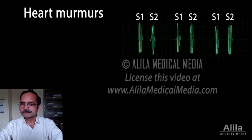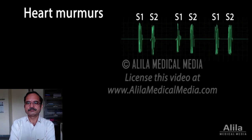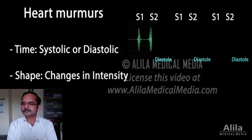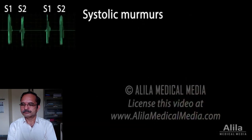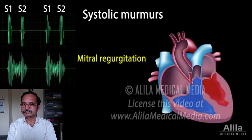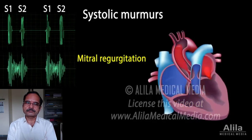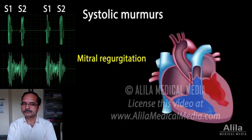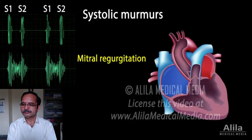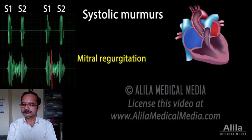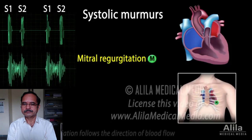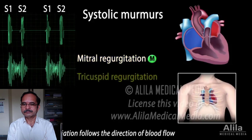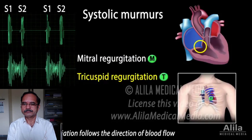Heart murmurs are rushing sounds produced by turbulent flow of blood. Murmurs are diagnosed based on the time they occur in the cardiac cycle, their changes in intensity over time, and the auscultation site where they are best heard. Mitral valve regurgitation: when the mitral valve does not close properly and blood surges back to the left atrium during systole, the murmur starts at S1 and maintains the same intensity for the entire duration of systole. This holosystolic murmur is best heard at the mitral region, the apex, with radiation to the left axilla. A tricuspid valve regurgitation has similar timing but is loudest in the tricuspid area, radiating up along the left sternal border.